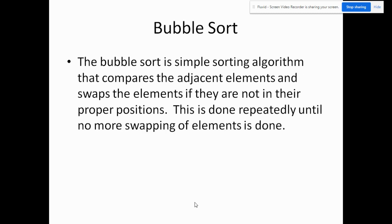Bubble sort is a simple sorting algorithm that compares the adjacent elements and swaps them if they are not in their proper positions. This is done repeatedly until no more swapping of elements is done. So it is one of the simplest sorting algorithms.